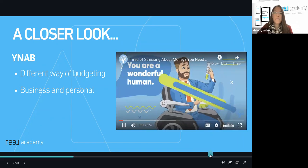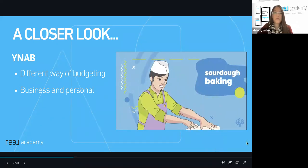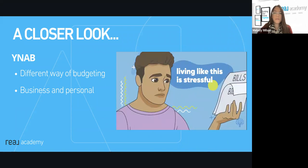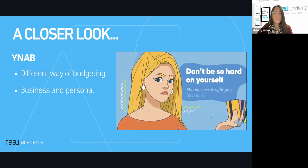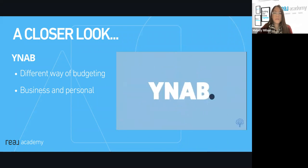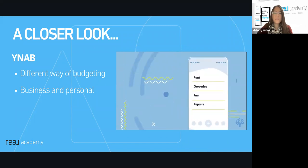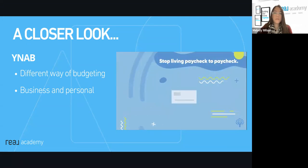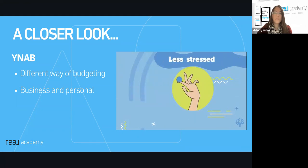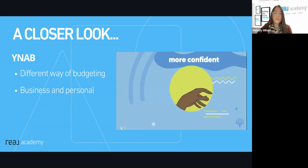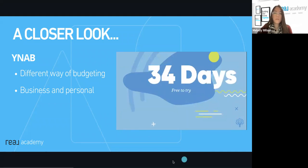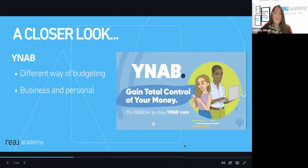You are a wonderful human, perfectly capable — furniture making, sourdough baking, next-generation raising person. But living like this is stressful. No one ever taught you how to do this. But we can help. It's simple: you need a budget. Use our proven app to manage your money. You'll take the money you have and make a plan. Those rainy days, you'll see them coming. When life changes, your budget can too. Before you know it, you'll break the paycheck-to-paycheck cycle forever. On average, new budgeters save $600 by month two, and your first 34 days are free.